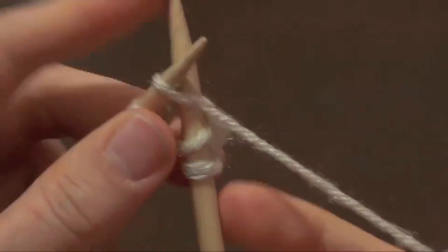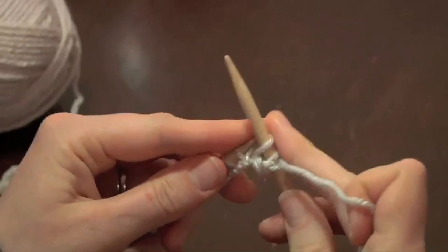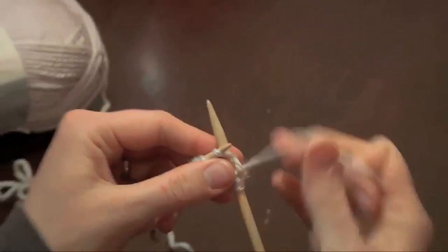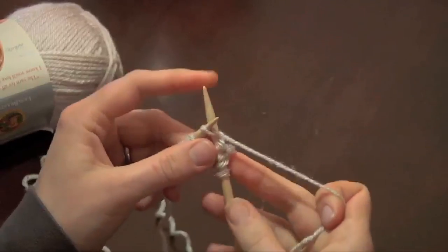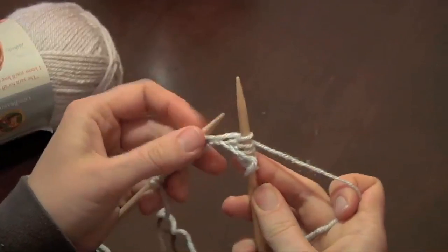I'm going to continue knitting the stitches, so you can see what the end result of your first row should look like. Slide in, bring the yarn around, pull through, slide off.